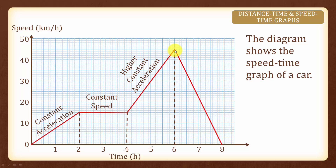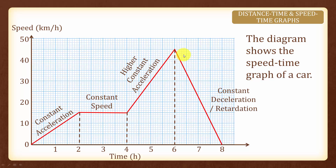Once again, acceleration is defined by the change in speed over the change in time. As the speed gets higher and higher, the car is actually accelerating. Now what about this last 2 hours here? The car is coming to a halt as the speed is approaching zero. And therefore, the car is having constant deceleration or what we call constant retardation.